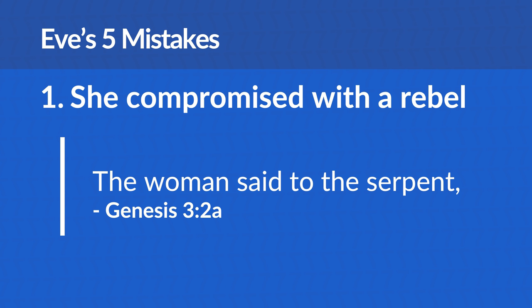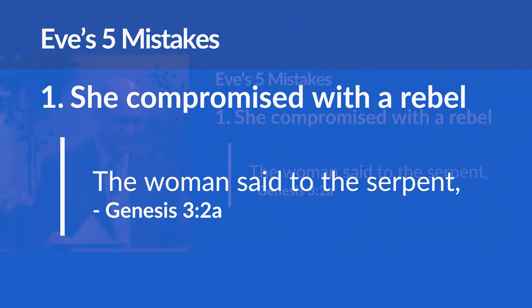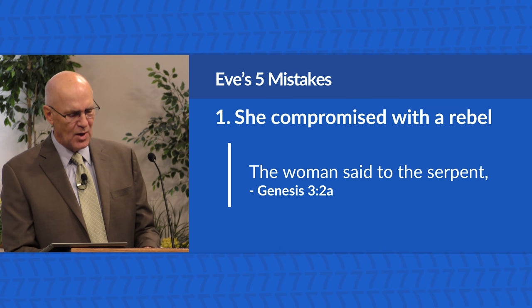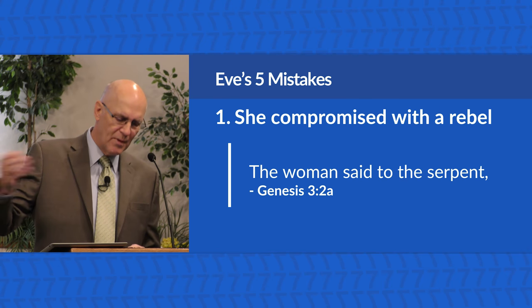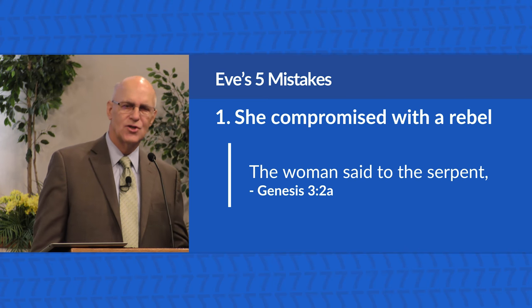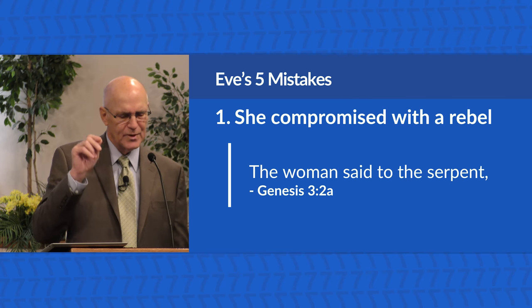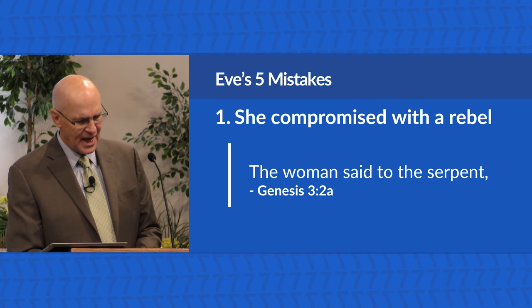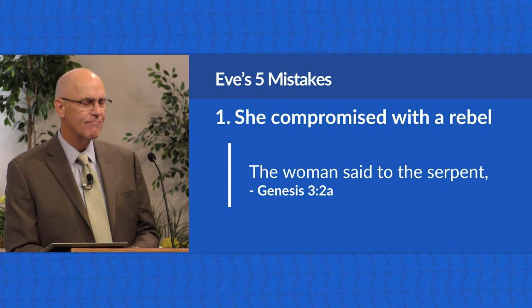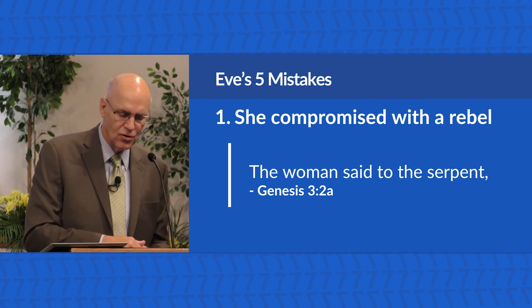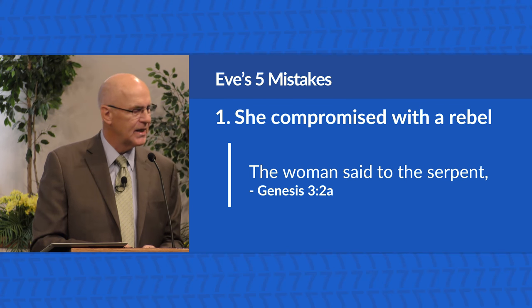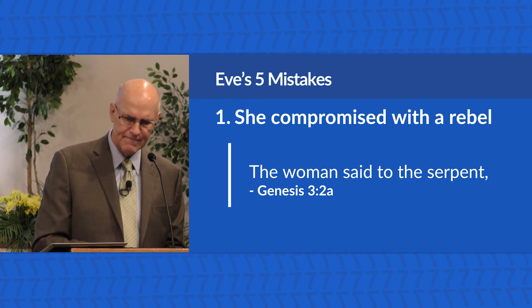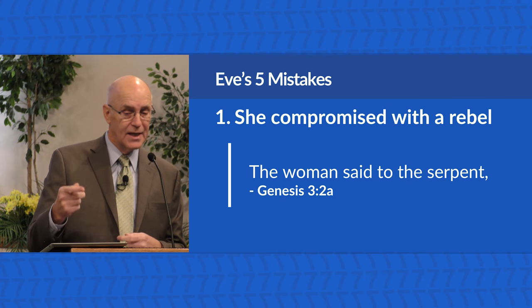Mistake number one: she compromised with a rebel. Not only does Eve respond to a rebel sinner and try to reason with him, she became part of the rebellion by condescending to talk with him. She should have rebuked him, but she tolerated the serpent's challenge to the order of things and began immediately to take a weaker position. She could have acted like Michael the archangel, who in dispute with the devil simply declared, 'The Lord rebuke you' — Jude verse 9. He did not engage with the evil one. She compromised with a rebel instead of rebuking him.